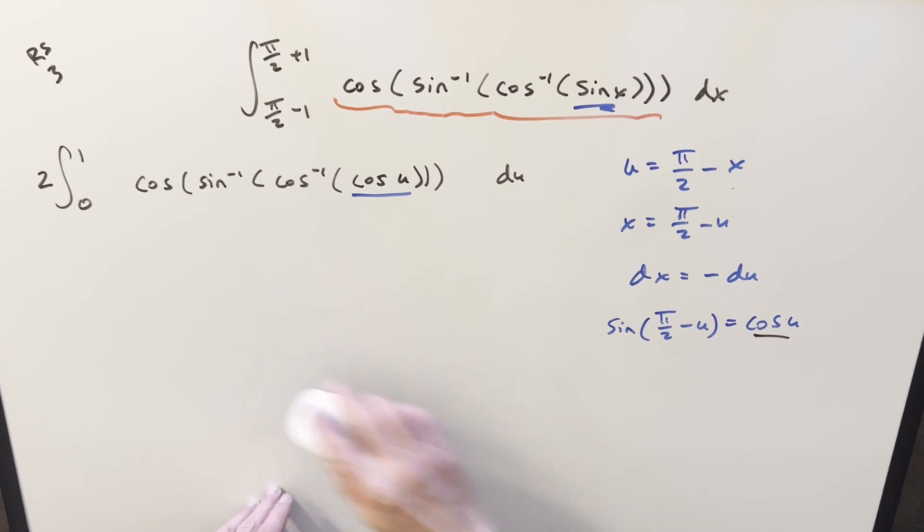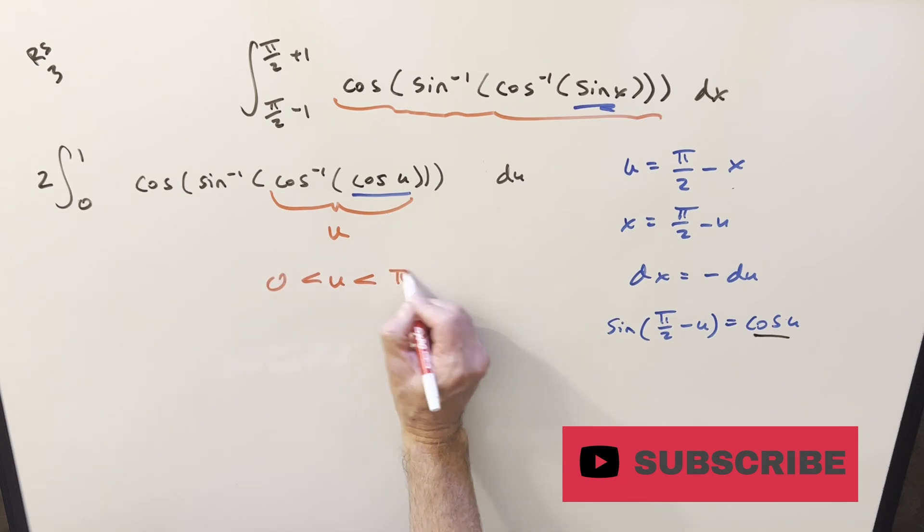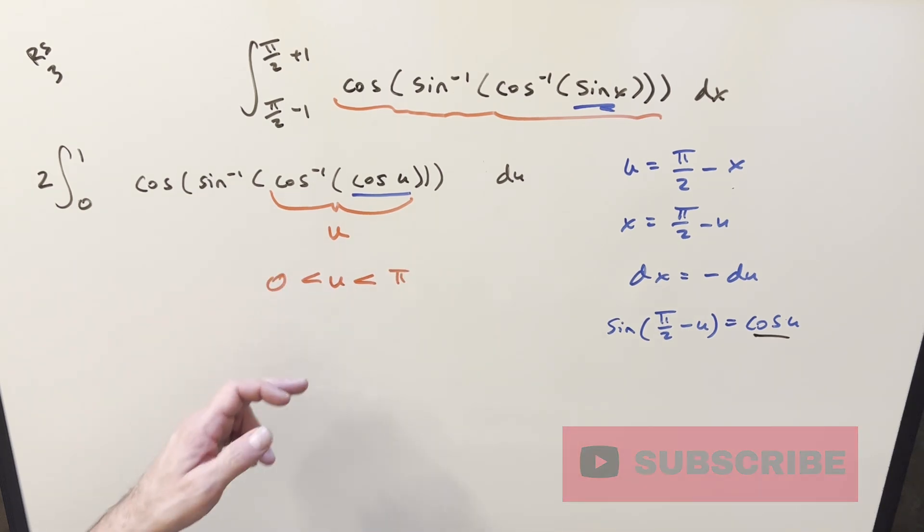And then here's where we get the real simplification because now this part right here is going to be the same thing as u. But we have to be careful because what we need is the u value to be between 0 and π. If we had negative values, it becomes minus u. But the thing is, we really don't have to worry about it because look at our bounds. All of our u values are between 0 and 1.